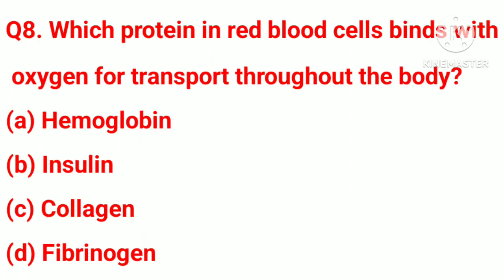Question number 8. Which protein in red blood cells binds with oxygen for transport throughout the body? Option A, hemoglobin. Option B, insulin. Option C, collagen. Option D, fibrinogen. Correct answer: Option A, hemoglobin.